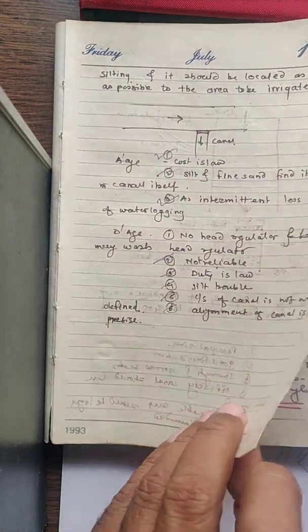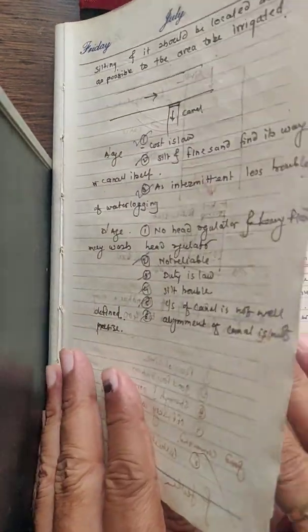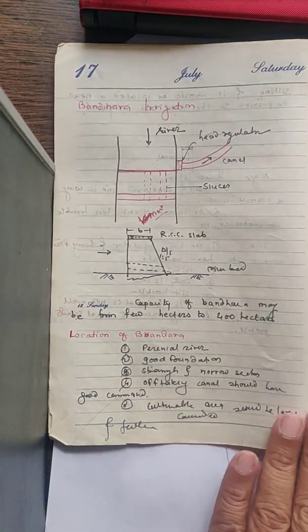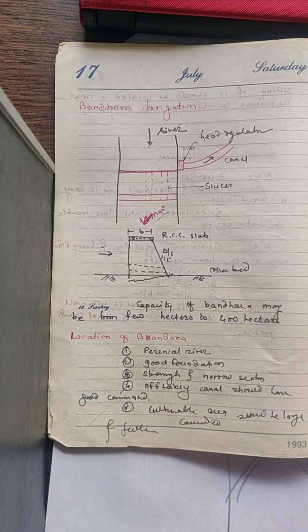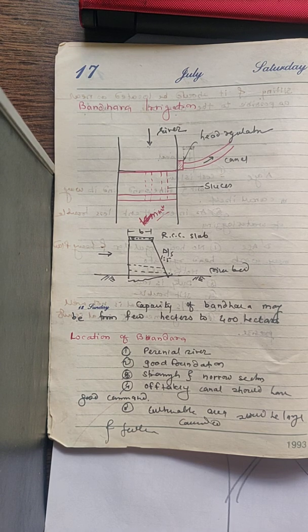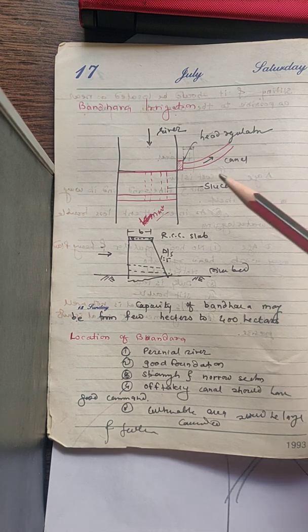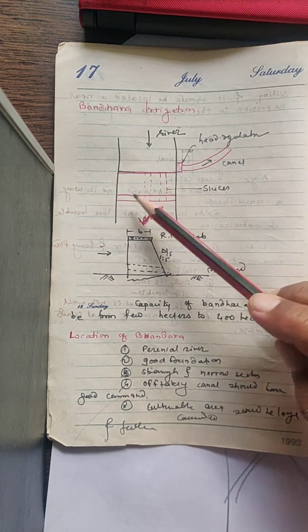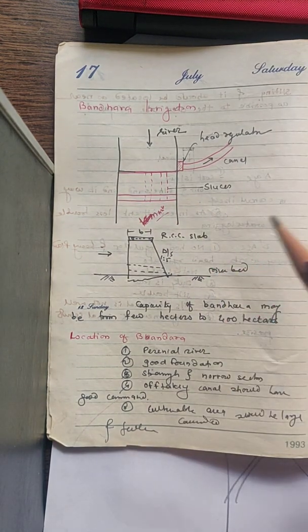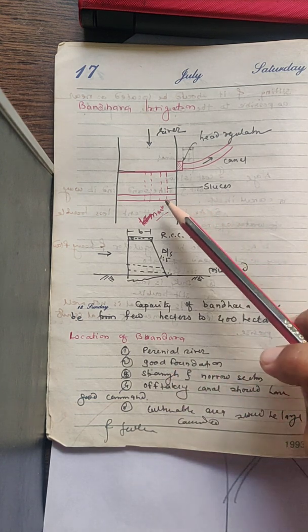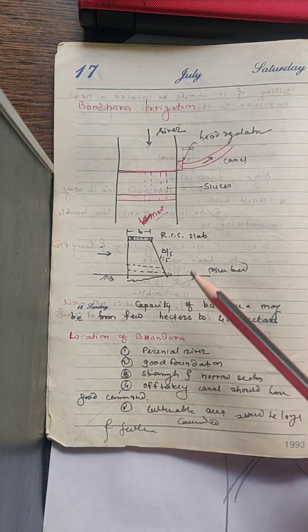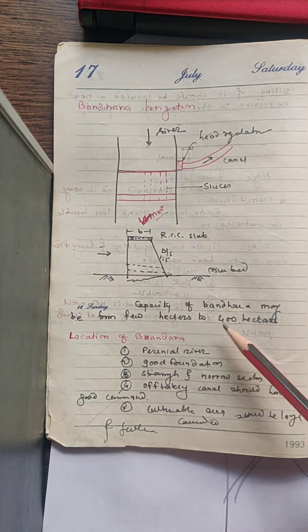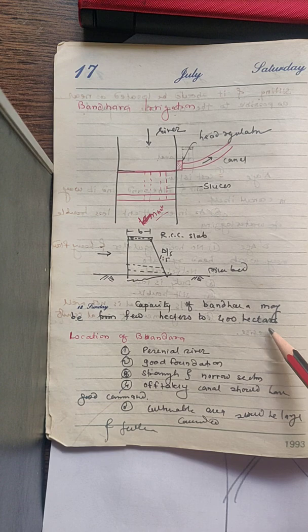This type of inundation canal is generally not available in our area; in our area permanent canals are used. Now we will see the next topic, that is bandara irrigation. In the river, a small structure is constructed within the bank of the river or within the bank of a nala. The capacity of this bandara may range from a few hectares to 400 hectares.